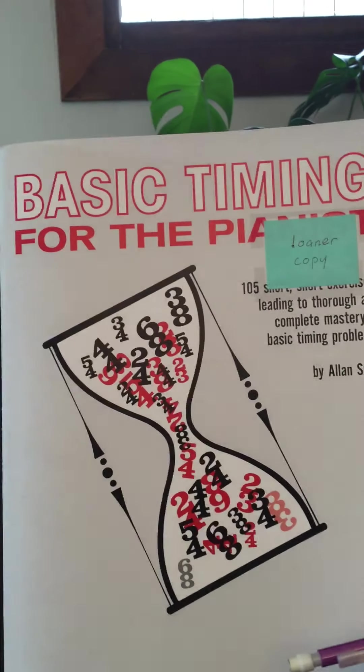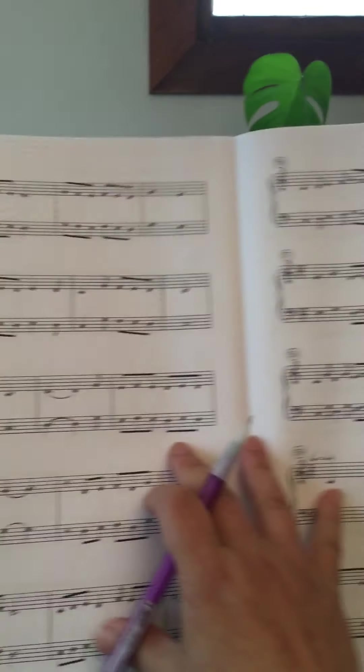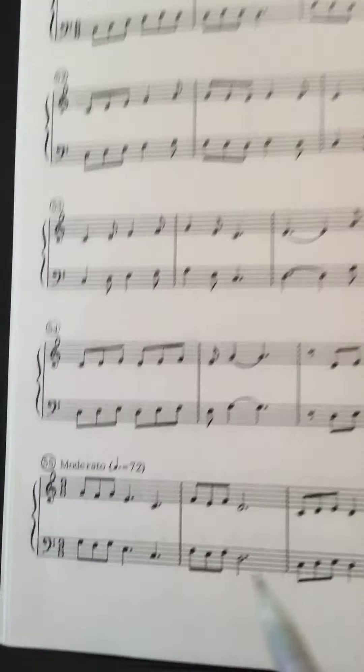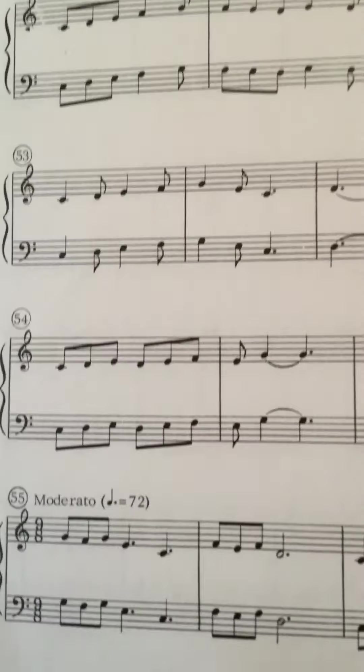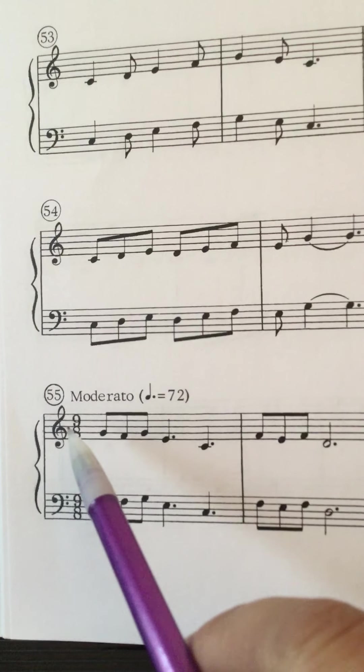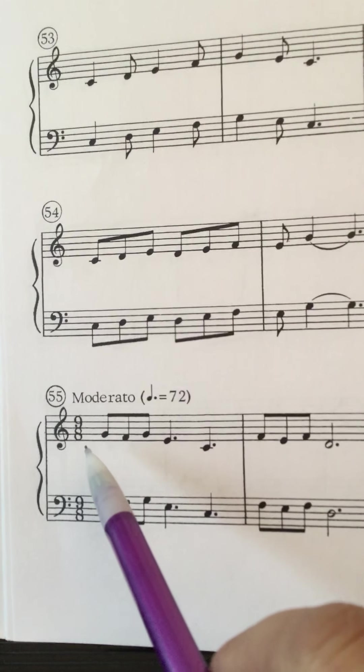Hi, so we're looking at basic timing for one-B people, looking at line 55. This is on page 14, at line 55, and we're gonna go all the way to 58, so working on 9-8 time, and then later 12-8 time.